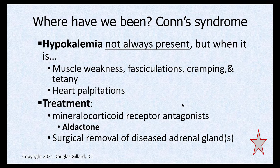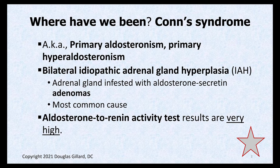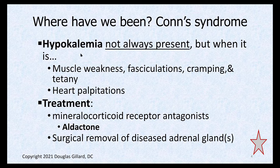Hypokalemia is also associated with tetany, muscle weakness, and fasciculations. In reality it's not always present, so you can't rely on it. If you suspect Conn's syndrome and they have hypertension, you should order the aldosterone-to-renin activity test to rule it out. Don't wait for hypokalemia to show up, because by then they may have damaged their heart — the heart does not like high levels of aldosterone.